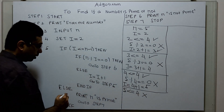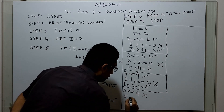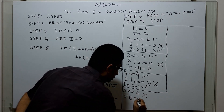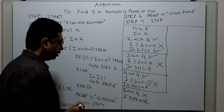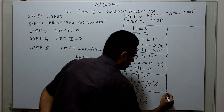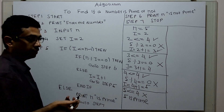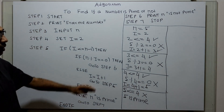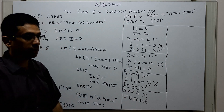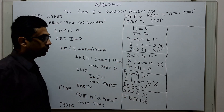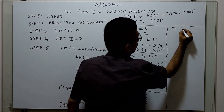We come to the else part and print n is prime. So the output is: 5 is prime. I entered 5 and the algorithm prints 5 is a prime number. We will now take a non-prime number and check how the algorithm works — I am taking the value 4, n equal to 4.